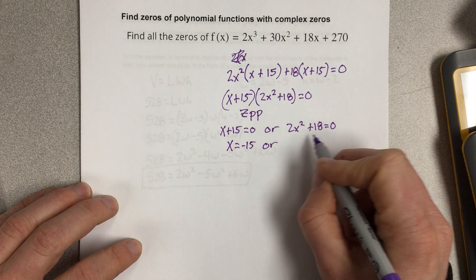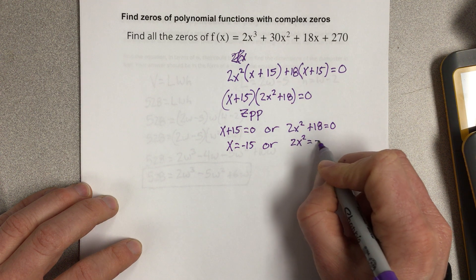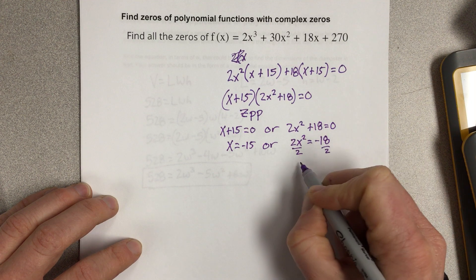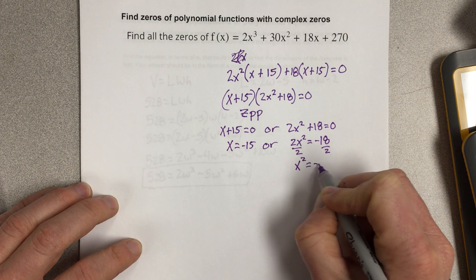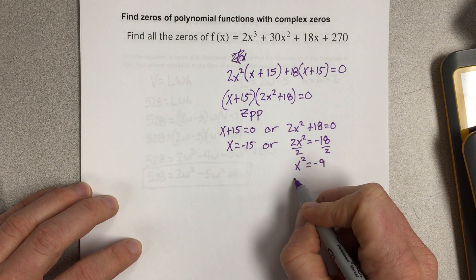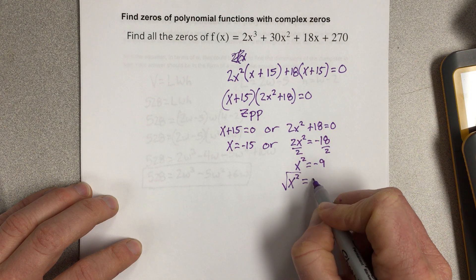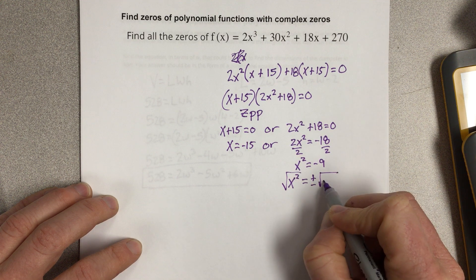Or subtract 18, so I get 2x squared equals negative 18. Divide by 2, and x squared is equal to negative 9. And then I'm going to do the square root on each side.